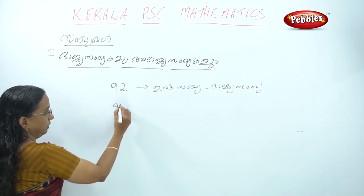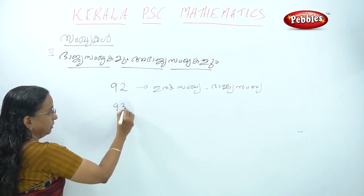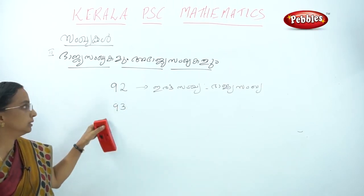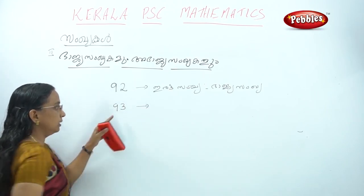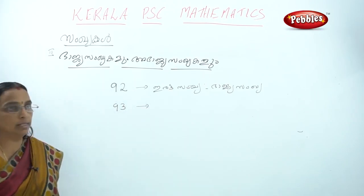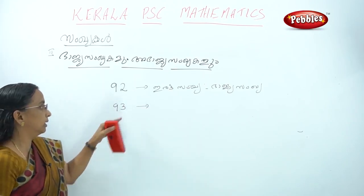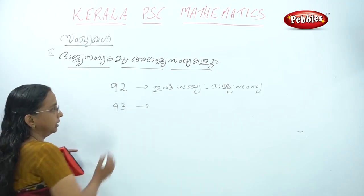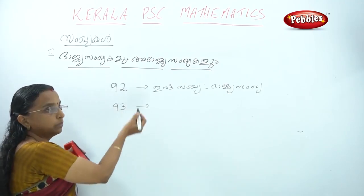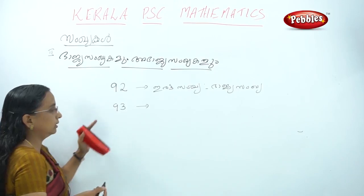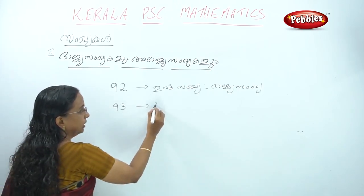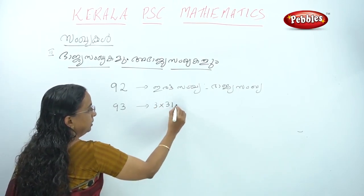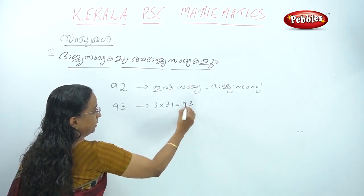Three to three. This is the one. It's not the one. But we don't have any. Three to three. One to three, one to three, one to three.